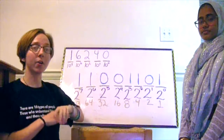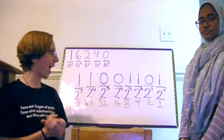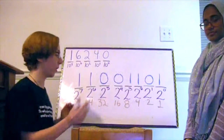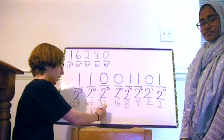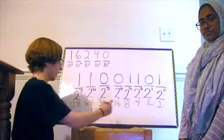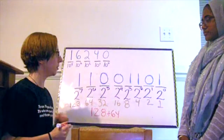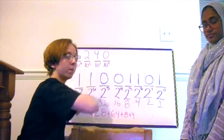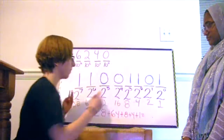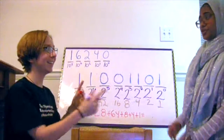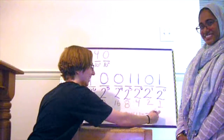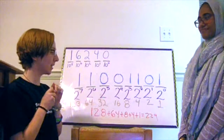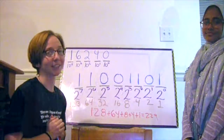To get this binary number into a decimal number, we add the powers of 2 that are present. So there is 1 one-hundred-twenty-eight, so we take 128 plus 64. There is no 32 and no 16, but there is an 8, and there is also a 4, no 2, but there is a 1. The sum of these powers of 2 is 205. So the binary number 11001101 is the same as 229 in decimal.